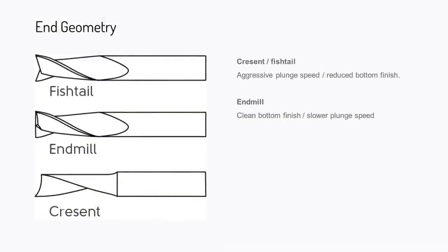When shopping for cutters, we've already called out that with the stock collet you'll want to go for the quarter-inch shank. End geometry plays a modest role. The type of end geometry we ship with the stock one is the end mill, which gets you a combination of moderately good plunge speed, chip extraction, clears the path in front of it quite well, and gives you a very good bottom finish of a pocket. The crescent and fishtail geometries are able to plunge faster but don't give as smooth a finish on the bottom of pockets.